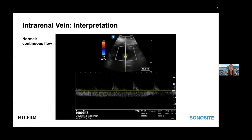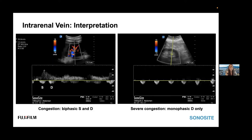Finally, interpreting the intrarenal veins. Normal flow should be continuous below the baseline with really minimal variation. As you progress through mild congestion, you'll see a biphasic pattern appear — distinct waves in systole and diastole. Finally, in very severe congestion, you will get monophasic flow in diastole only.